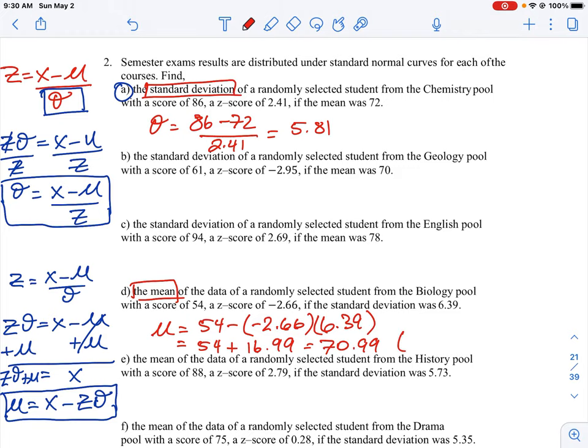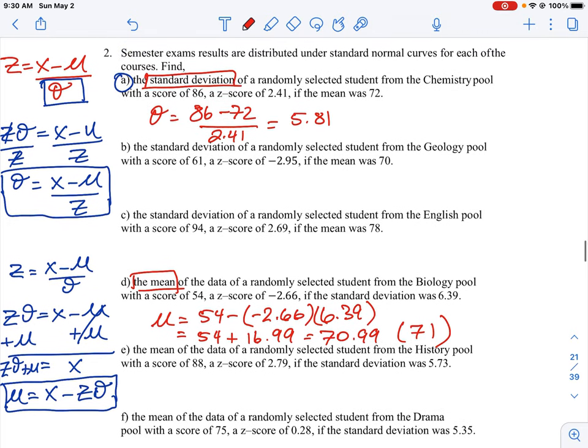And I believe if you look in the answer key, we just round that up to the nearest whole number, which is 71. All right, so that's how you look at doing question two.